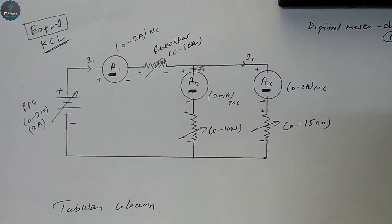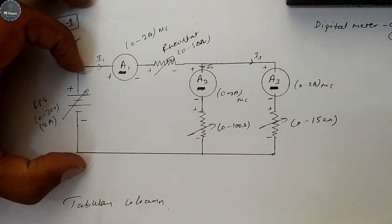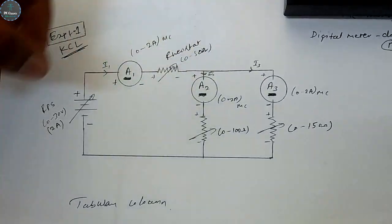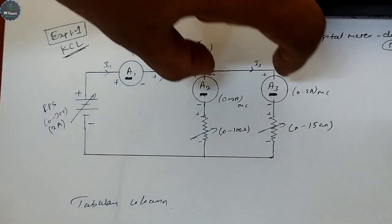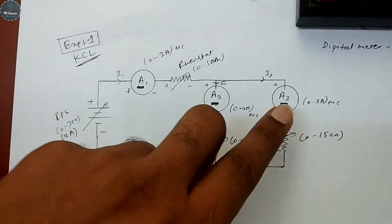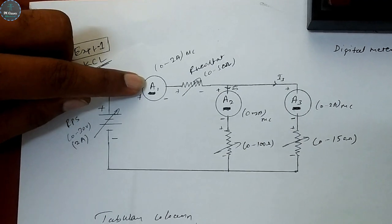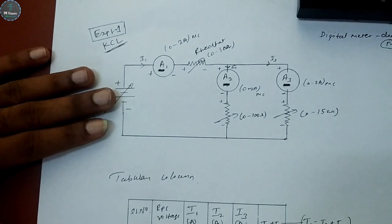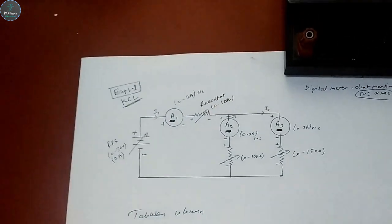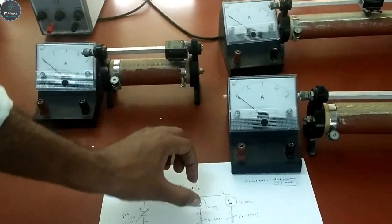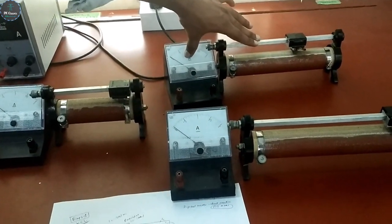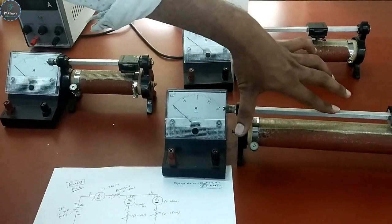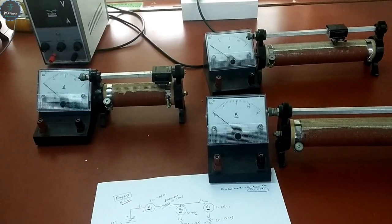Welcome to the basic electrical laboratory. Let us conduct the KCL experiment. The circuit diagram has three rheostats, three ammeters, and one RPS. This node is the junction where entering current equals leaving current. The ammeter 1 reading equals the sum of ammeter 2 and ammeter 3 readings, because I1 is entering and I2 and I3 are leaving. Components are arranged accordingly: one ammeter and one rheostat for each branch. As per your requirement, you can set the rheostat values.